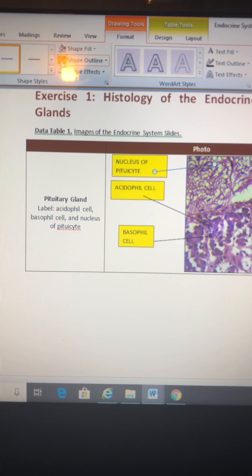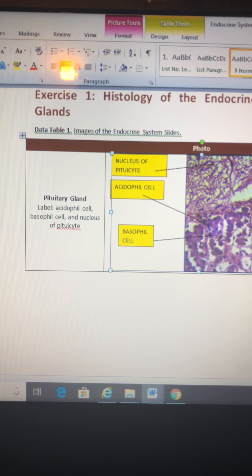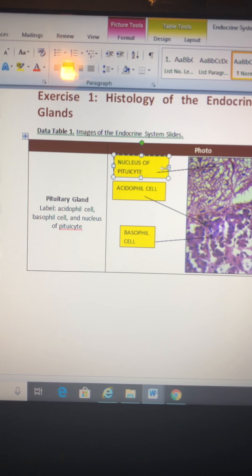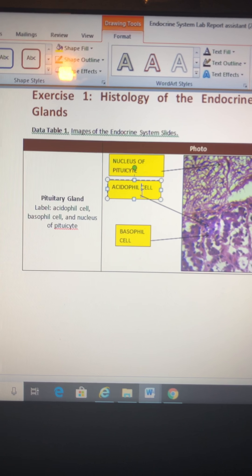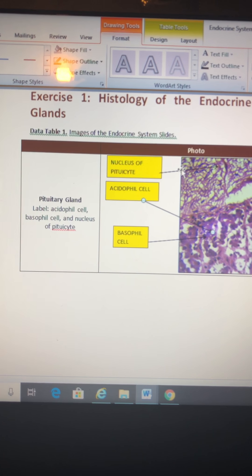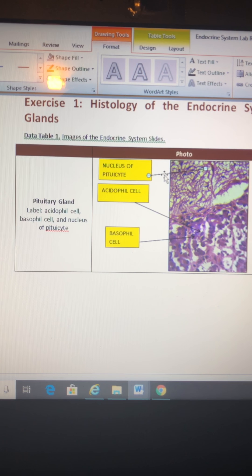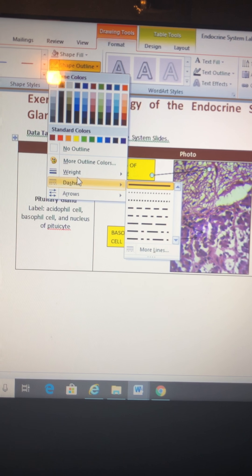And then another one will be the basophil cell. That would be a blue color. So first, Insert text box. That's basophil. Just going to resize it and then fill it.